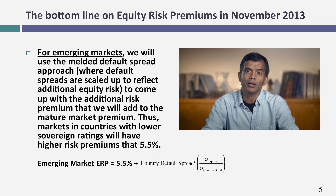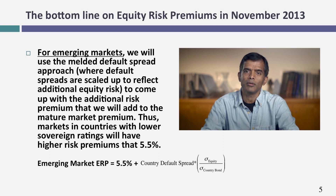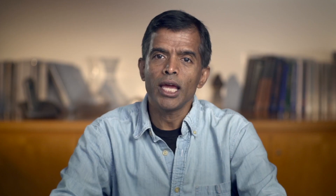What about remaining markets? I could try to compute an implied premium for India, China, and Brazil, but it's difficult to do with readily accessible information. Getting expected long-term growth rates for earnings and cash flows in emerging markets is tough. So rather than compute an implied premium for each of these markets, I'm going to use a three-step approach to estimating country risk premiums.